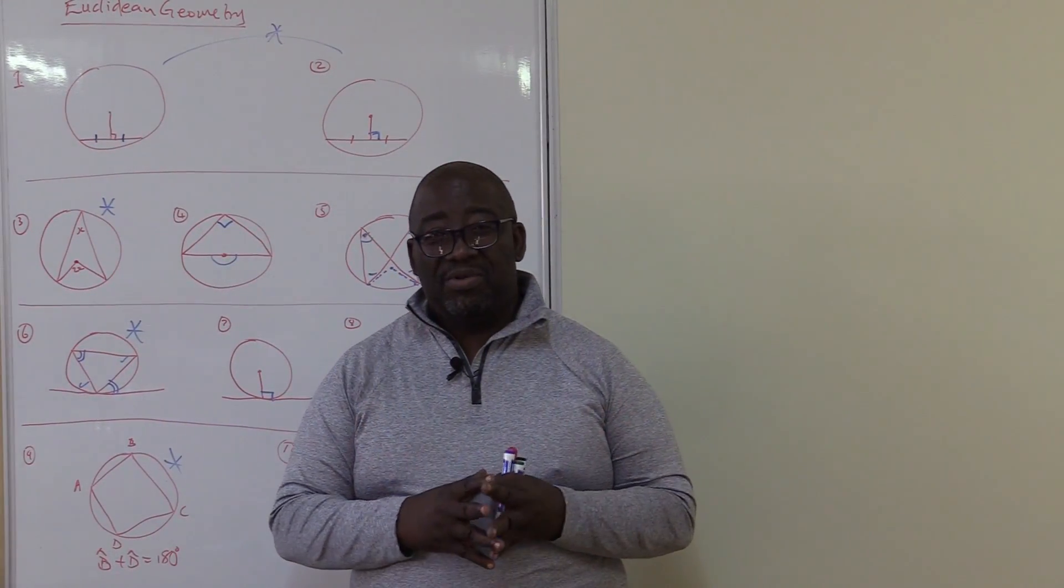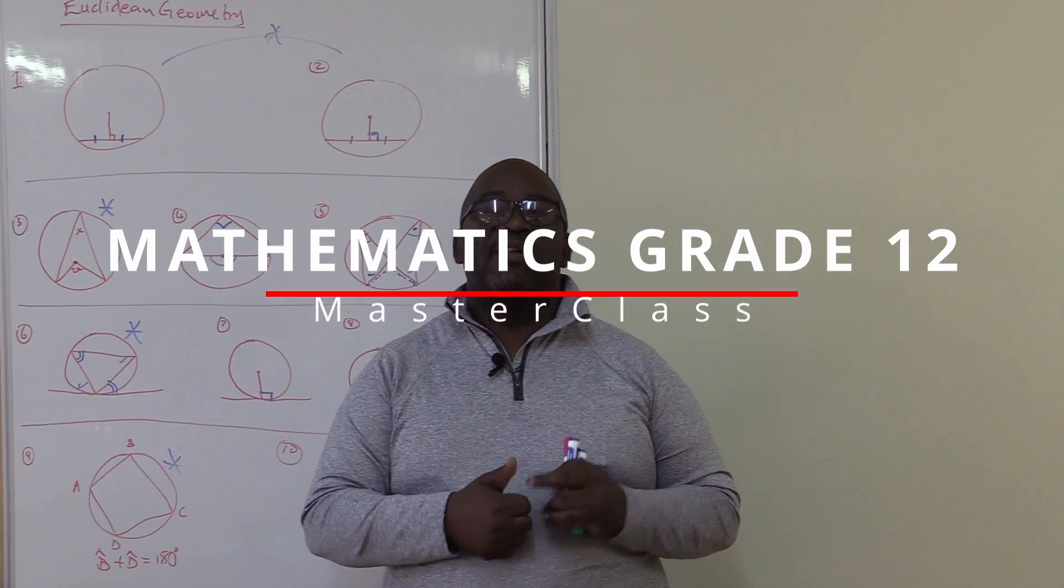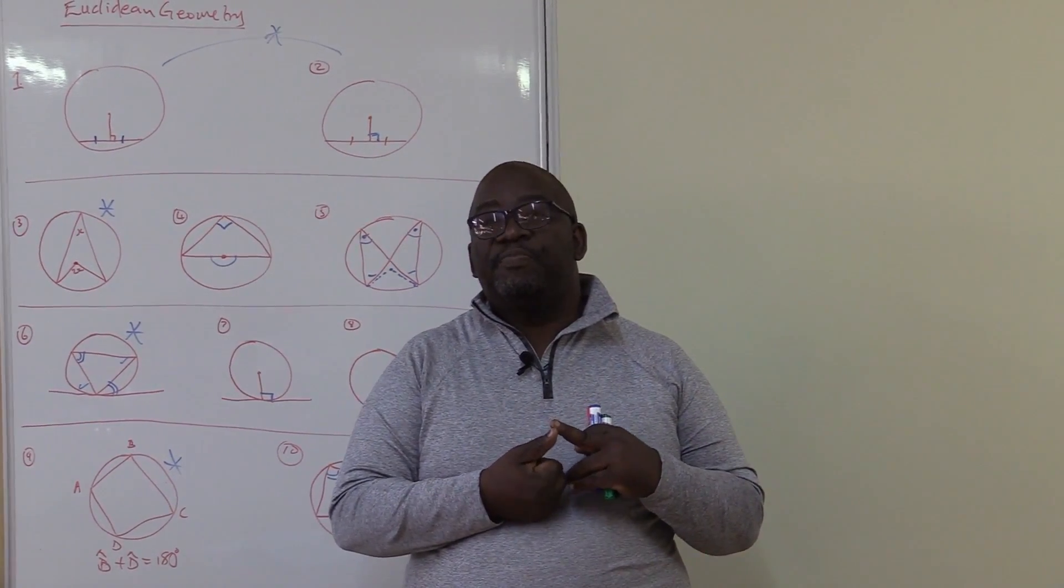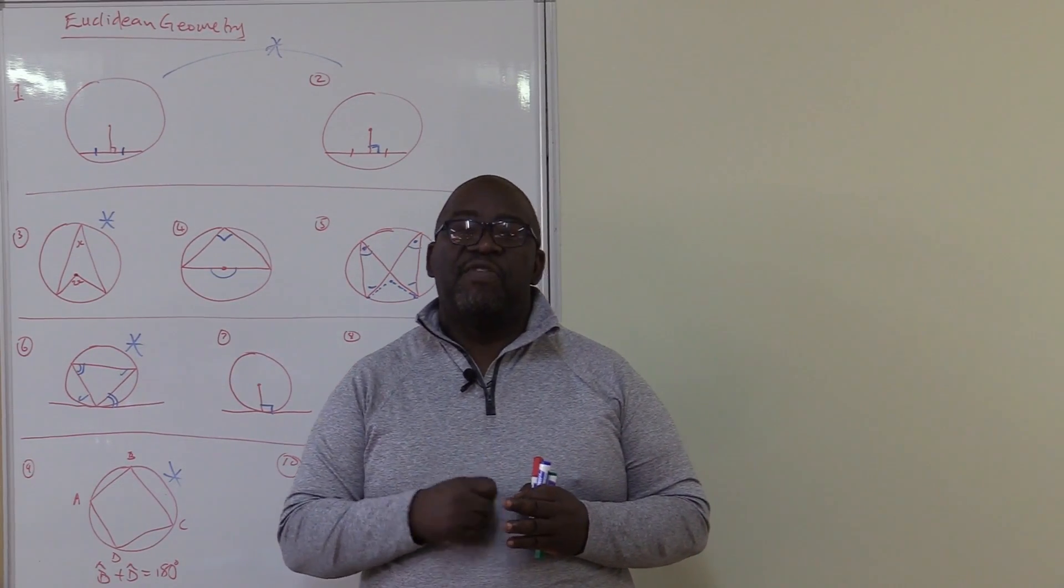Remember that it's all about 13 theorems. This 10 plus the 3 create 12 theorem. The first one says triangles with equal altitude have the ratio of their areas equal to the ratio of their bases.